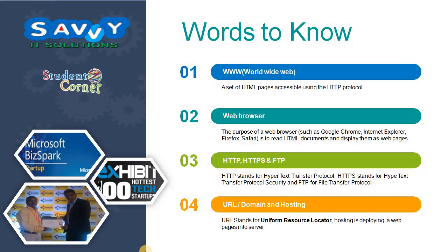Now the first one is World Wide Web, also called WWW. And we need to know what is Web Browser, HTTP, HTTPS, and FTP — Hypertext Transfer Protocol, Hypertext Transfer Protocol Security, and File Transfer Protocol — URL, Uniform Resource Locator, and Domain and Hosting Process. Now we need to know about these topics.